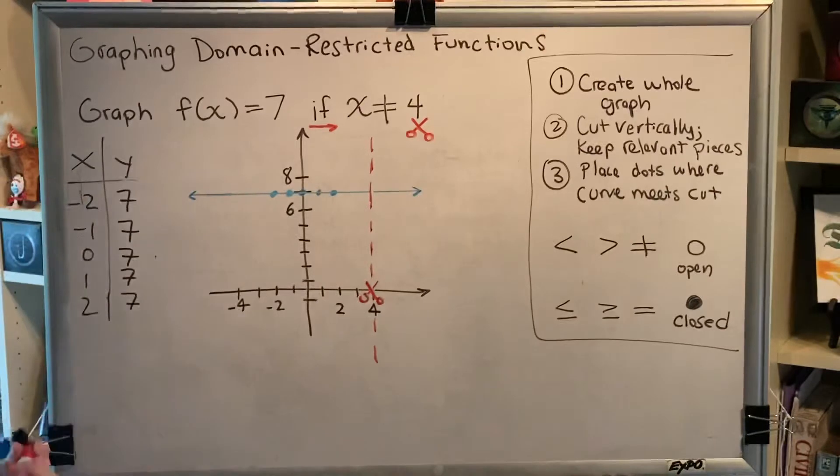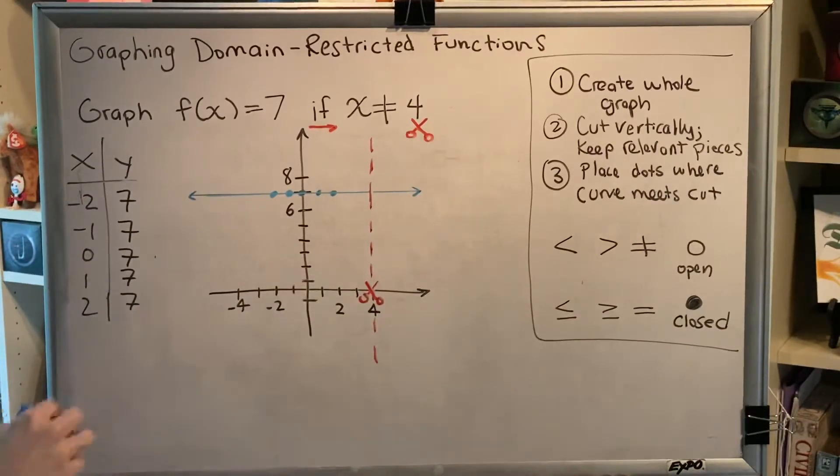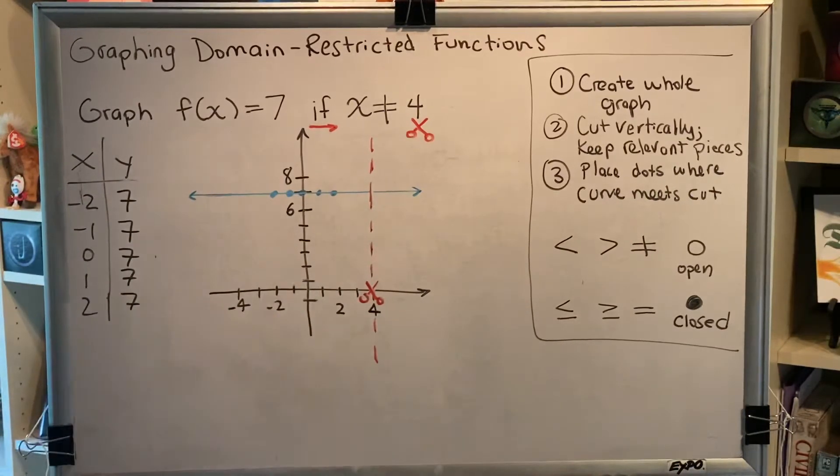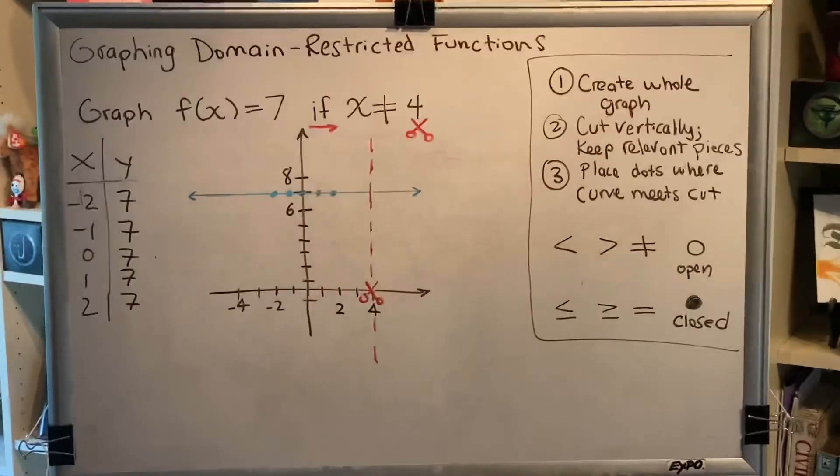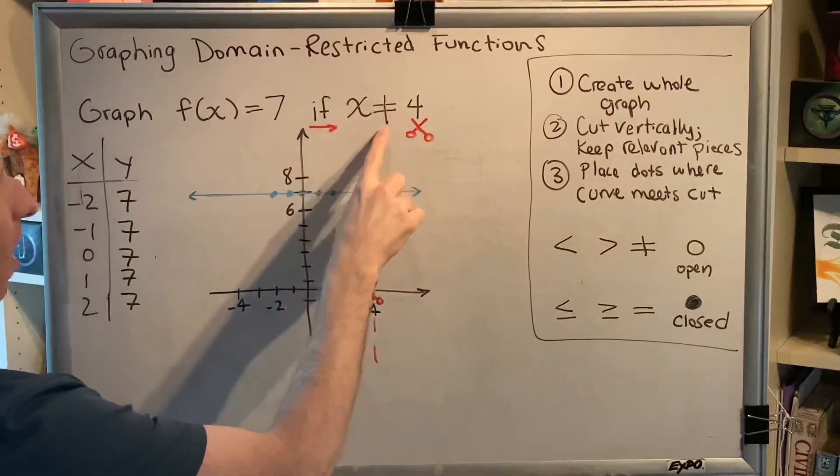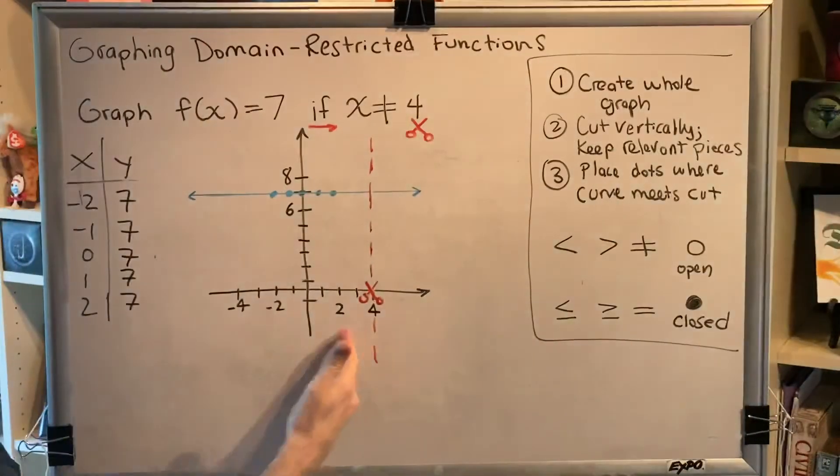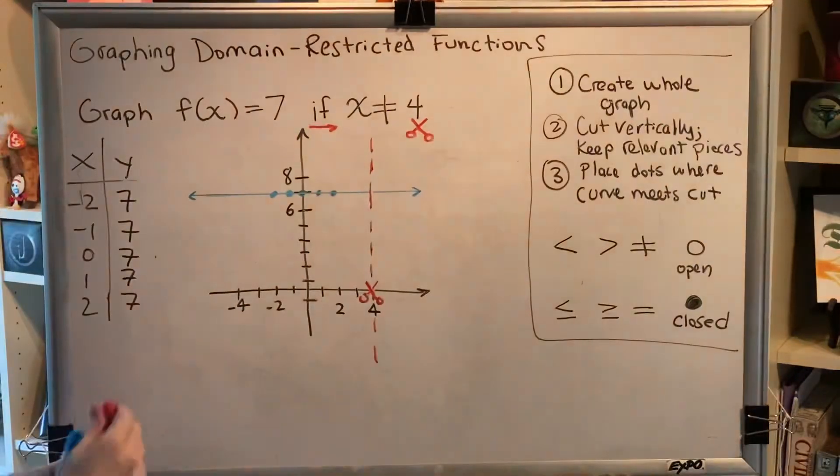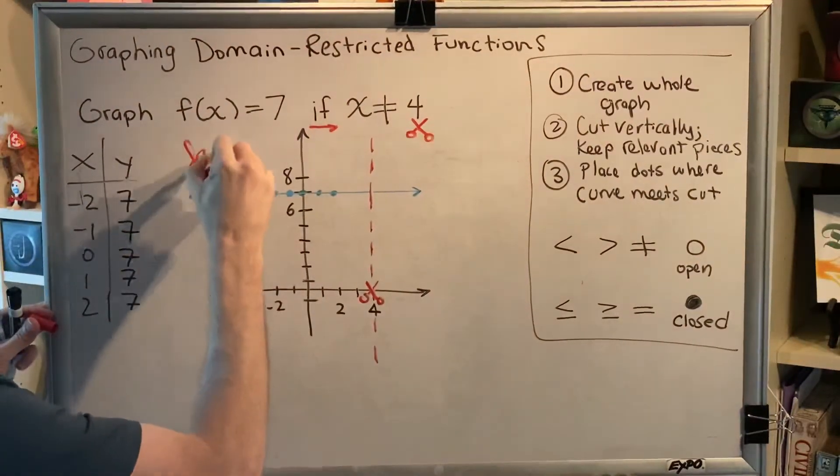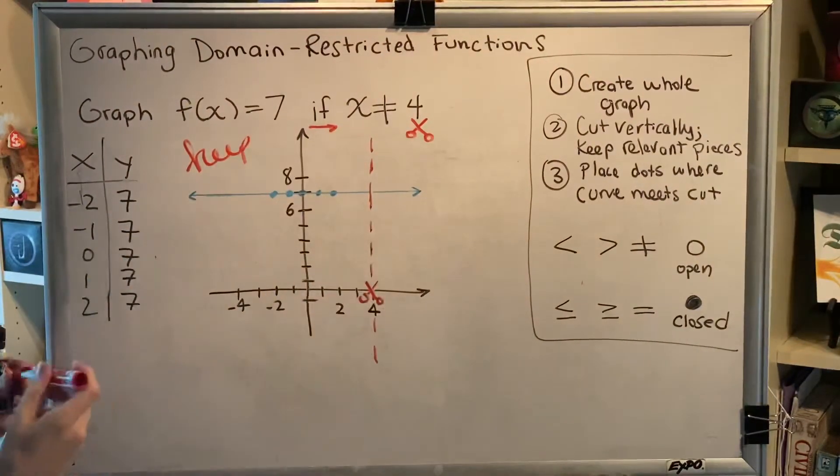And then I have to decide, what part of the graph do I want to keep? The left side, or the right side, or some combination? Well, I have to understand what the inequality is telling me to know what part to keep. I want to keep the part where x is not 4. So if I look to the left, I see that x comprises numbers like 3, 2, 1. Those are all not 4. So I want to keep this side of the dashed line.